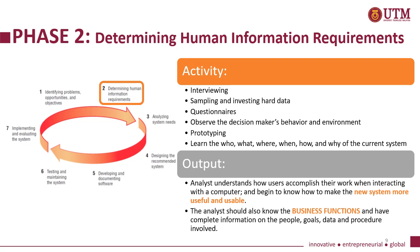Phase two: determining human information requirements. There are six main activities. One, interviewing. Two, sampling and investigating hard data. Three, questionnaires. Four, observe the decision maker's behaviour and environment. Five, prototyping. And six, learn the who, what, where, when, how and why of the current system. For the output, the analysts need to understand how users accomplish their work when interacting with a computer, and begin to know how to make the new system more useful and usable. They should also know the business functions and have complete information on the people, goals, data and procedures involved.